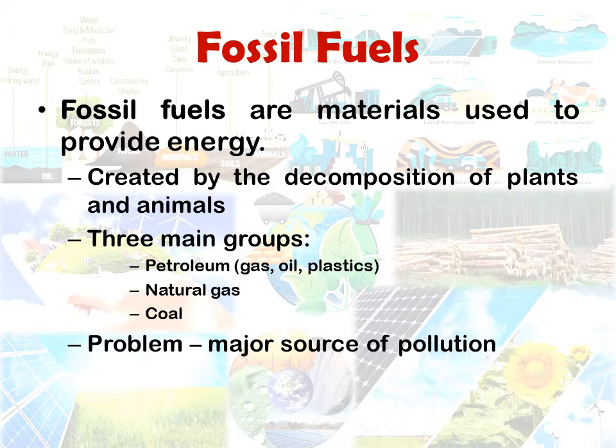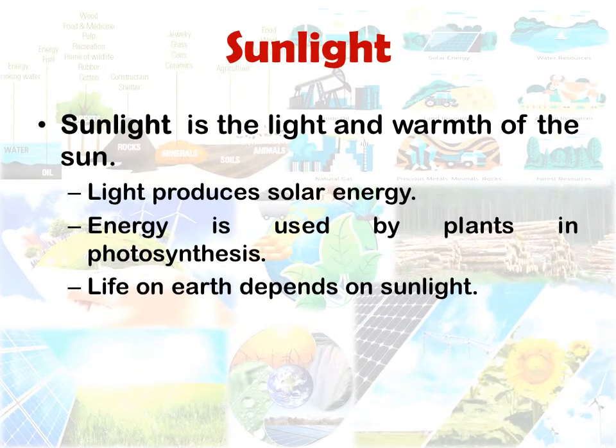Sunlight is also a major source of energy. Light produces solar energy, which is used by plants in the process of photosynthesis. All life on earth depends on sunlight — plants are autotrophs that are dependent on sunlight to synthesize their food.